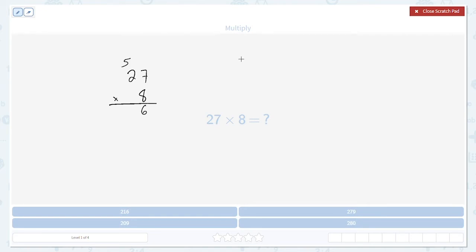Next, do 8 times 2. That's 16. Remember that 5. 16 plus 5 is 21. 21. And that's our answer. 27 times 8 is 216.